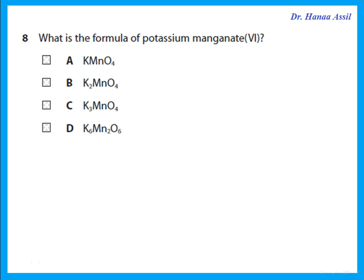What is the formula of potassium manganate(VI)? Manganese has +6, each oxygen is −2. With four oxygens that's −8, so the overall from potassium must be +2. Potassium is in group 1, each is +1, so we need 2 potassiums. The formula is K₂MnO₄.